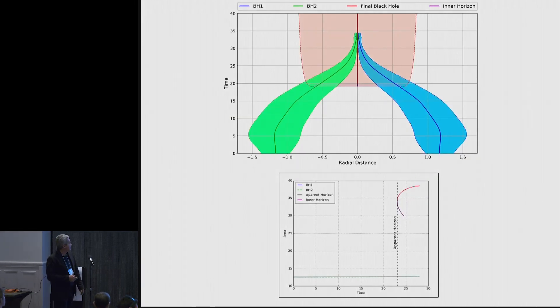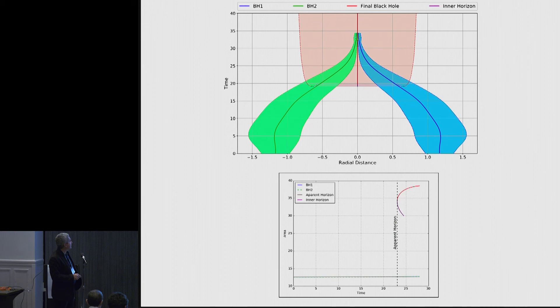All right. So how about this bifurcation? Well, here is another example in which, when the apparent horizon appears, indeed, there is another one that is an inner horizon appearance that moves in.